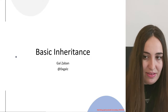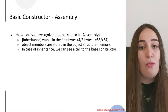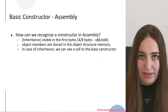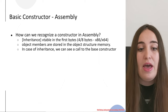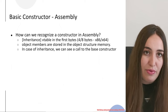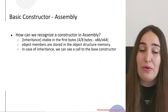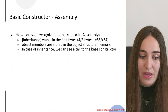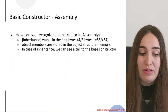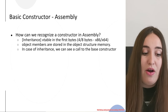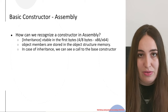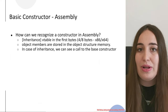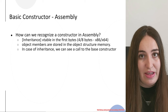Our topic is basic inheritance. We discussed previously basic constructors and how to identify and recognize them in assembly code. We examined options to recognize what you are looking at is a constructor, and in this part we focus on what happens when a constructor belongs to a derived class or a base class, and what happens when we have virtual functions involved.